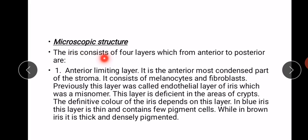The microscopic structure of the iris consists of four layers from anterior to posterior. The first is the anterior limiting layer, which is the anteriormost condensed part of the stroma and consists of melanocytes and fibroblasts. This layer was formerly called the endothelial layer of the iris, which was a misnomer. It is deficient in the areas of crypts, and the definitive color of the iris depends on this layer because it contains melanocytes.